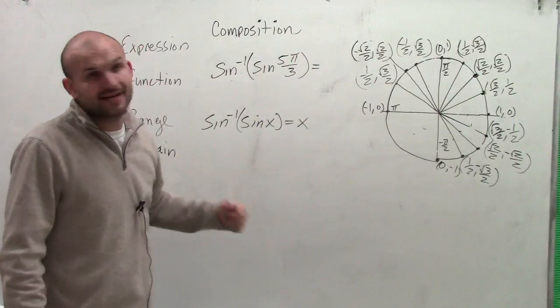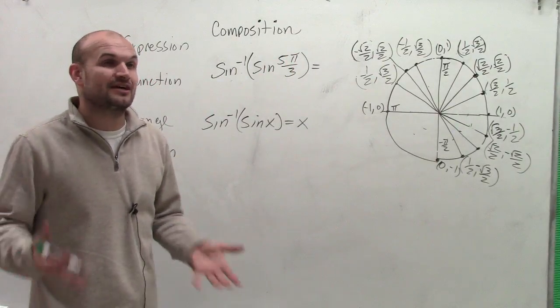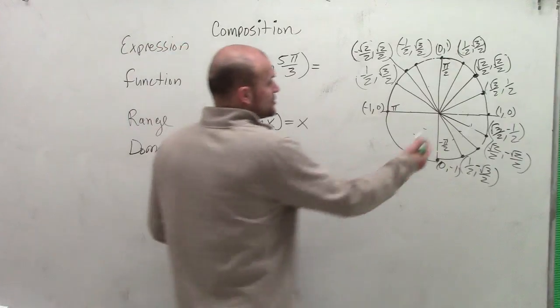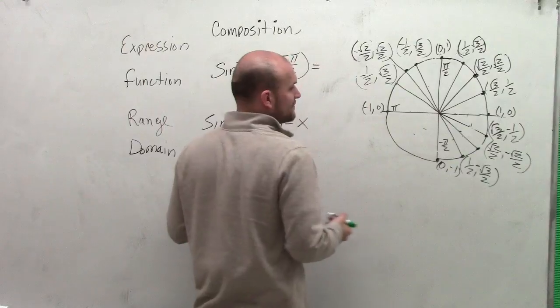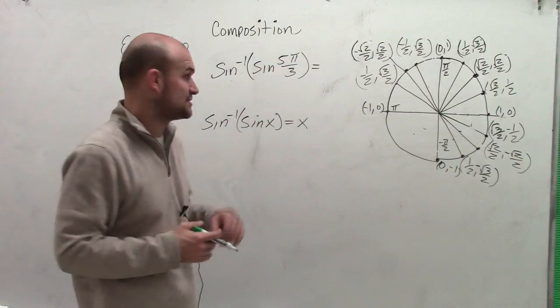So if I was going to take the sine of 5π over 3, let's determine where exactly that y-coordinate is going to be. So the sine of 5π over 3, that's going to take me to a coordinate point 1/2, negative square root of 3 divided by 2.